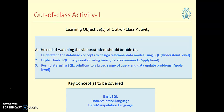The learning objectives for the out-class activity are: first, understand the database concept to design a relational data model using SQL — at the understand level. Second, explain basic SQL query creation using insert, delete, and update commands — at the apply level. Third, formulate SQL solutions to a broad range of querying and data update problems — also at the apply level. The key concepts to be covered are basic SQL, Data Definition Language (DDL), and Data Manipulation Language (DML).